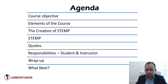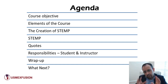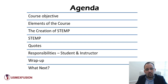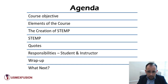The agenda for this course is: first, I'm going to tell you the objective of the course, then the elements of the course, then we're going to go deep on the system itself, then I'm going to tell you what STEMP is, more information about STEMP and its different elements, quotes I like to ponder when talking about teaching, responsibilities of the student and instructor, and then I'll explain what's going to come next after you finish watching this video.